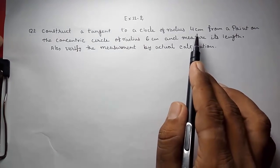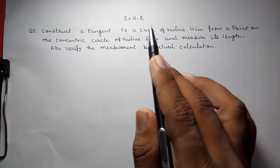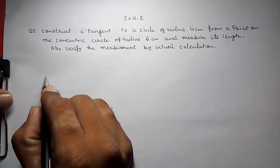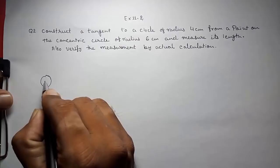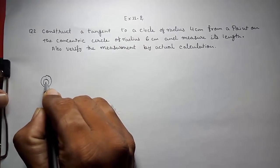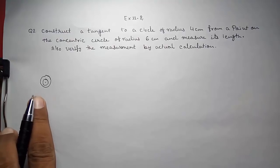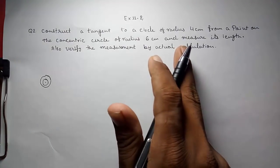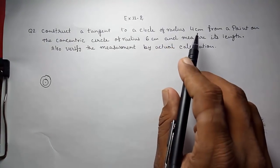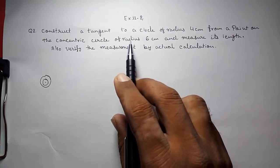They had given us two concentric circles. What is a concentric circle? When two circles have the same center point, then those circles are called concentric circles. So here we are having two concentric circles, one with radius 4 cm and one with radius 6 cm.